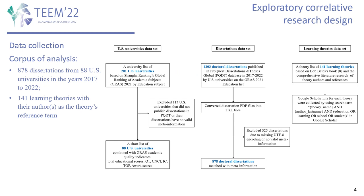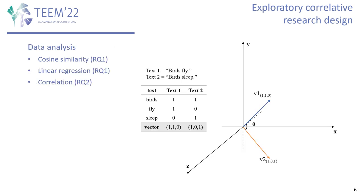We conducted an exploratory correlative research design, which included three datasets: U.S. universities' dissertations and learning theories. The diagram shows the procedures of this data collection. The corpus of analysis consists of 878 dissertations from 88 U.S. universities and 141 learning theories. For data analysis, we mainly implemented cosine similarity and linear regression for RQ1 and correlational analysis for RQ2.